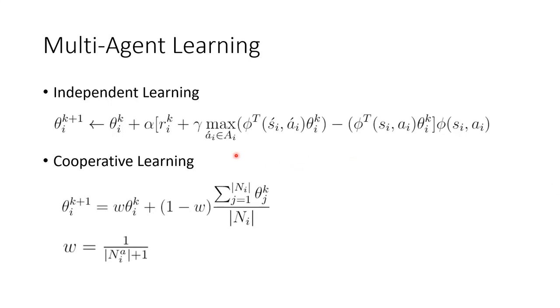For the multi-agent learning component, agents first learn their approximated theta tables independently, and then they share with their neighbors to cooperatively learn together.